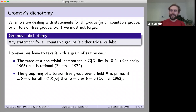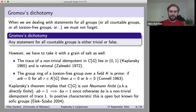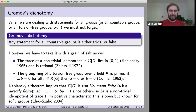The complex group algebra is von Neumann finite, or alternatively called directly finite, in the sense that every left invertible element is also right invertible: if ab = 1, then ba = 1. That's because if ba were not 1, it would be a non-trivial idempotent — it's idempotent because when we square it, we have ab in the middle to replace with 1, and it has trace 1 because of the trace identity. So this is something we get quite easily for complex group rings.